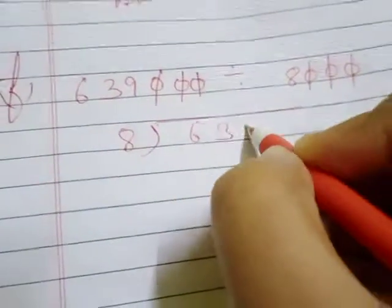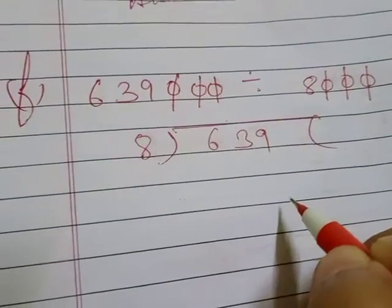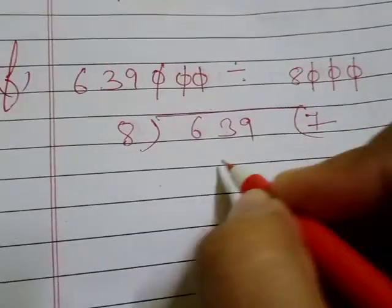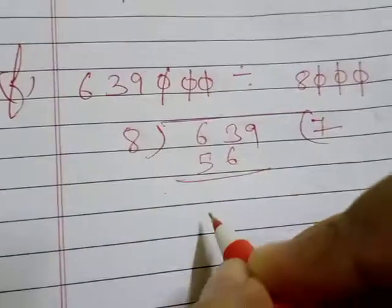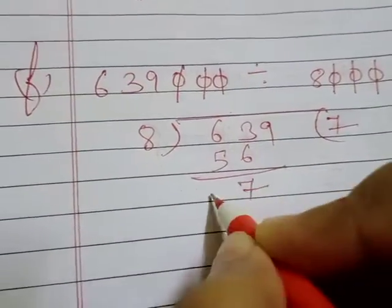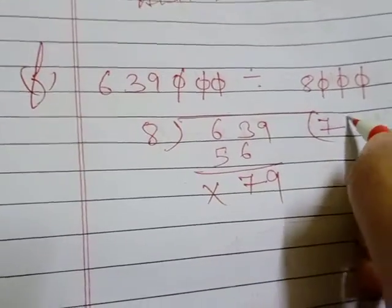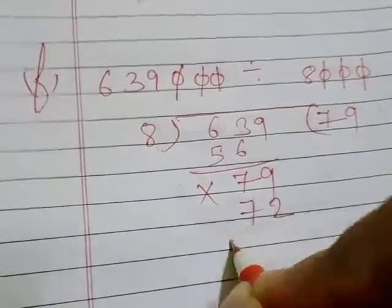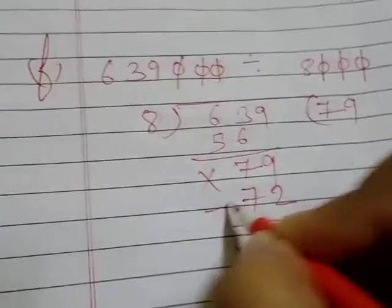Now we will solve. Eight sevens are 56, so seven will remain here. Then nine - eight nines are 72 - so seven will remain here like this. Got it clear?